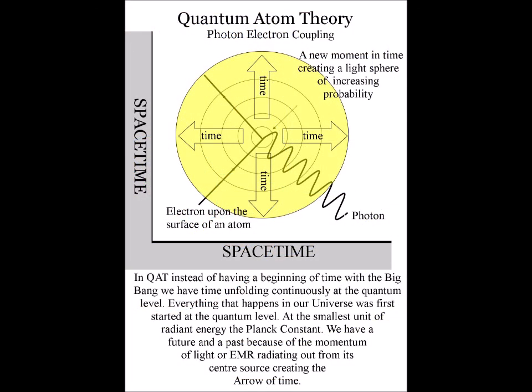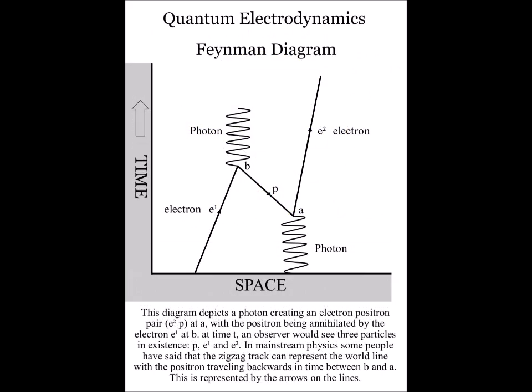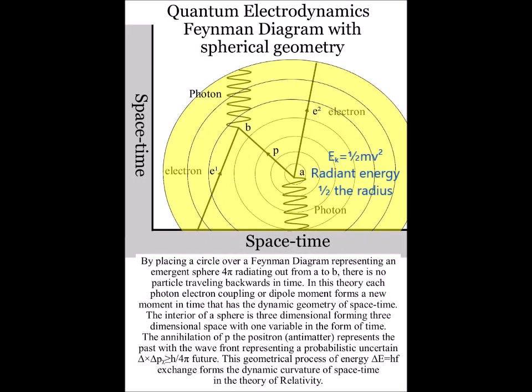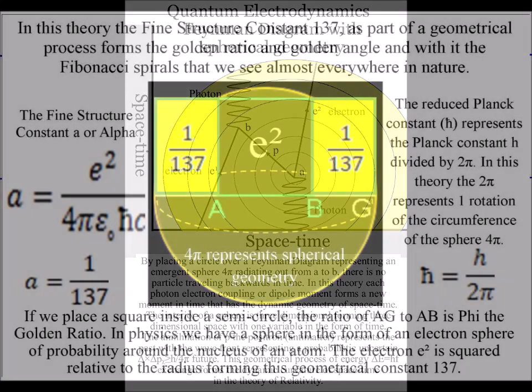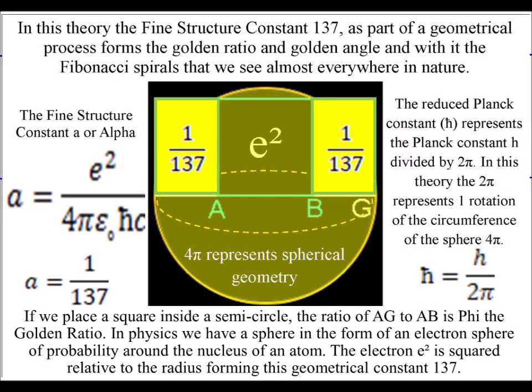This exchange of energy turns potential energy into kinetic energy, the energy of motion, the energy of what is actually happening. Because the process is based on a dynamic geometry, at each exchange of energy, we have a fine structure constant or coupling constant 137.